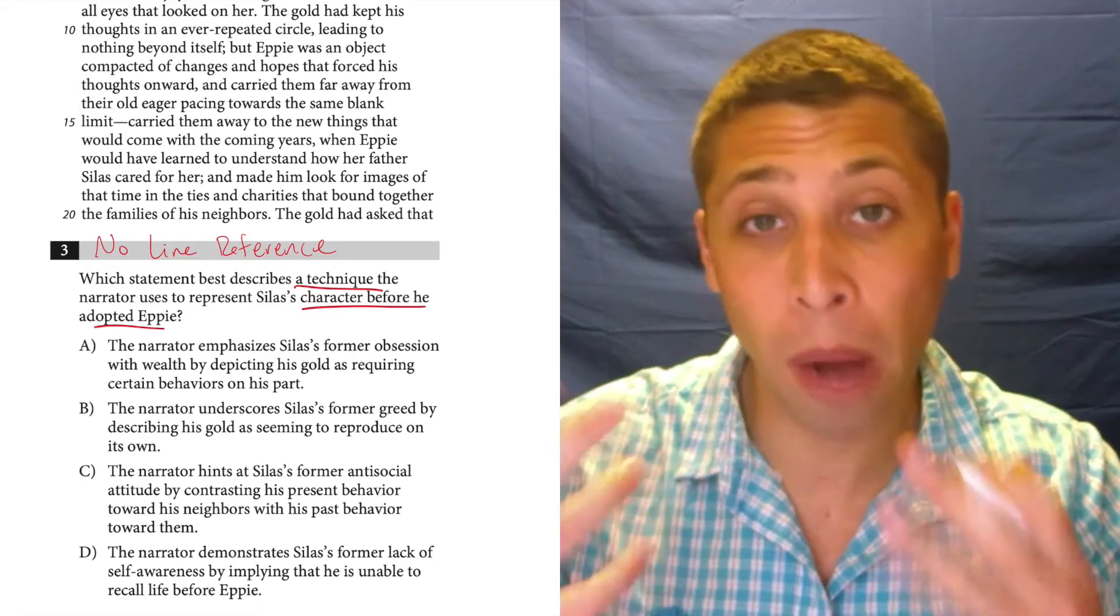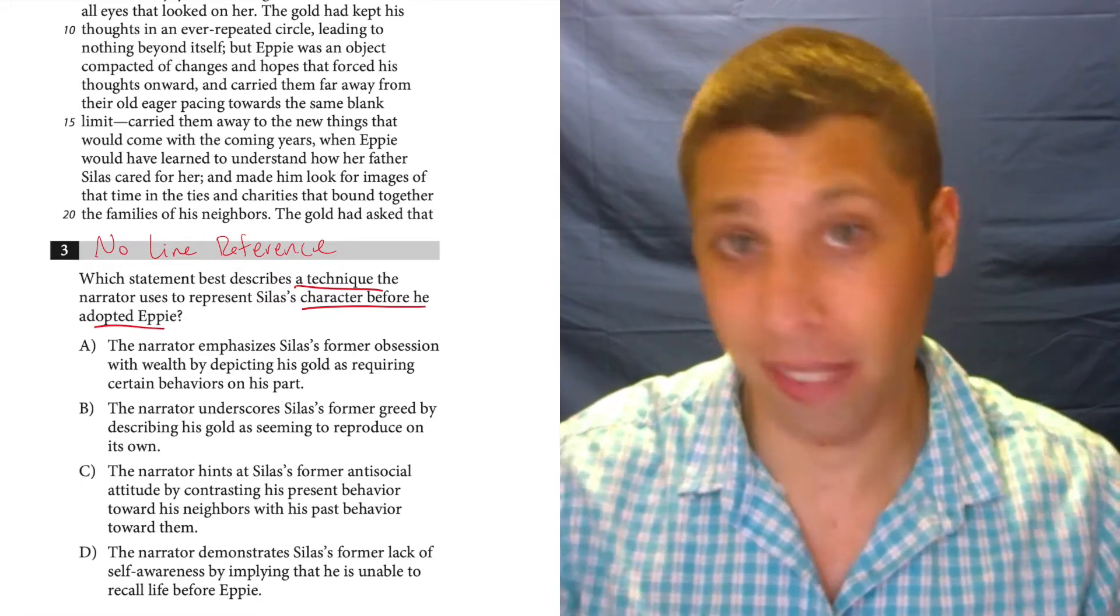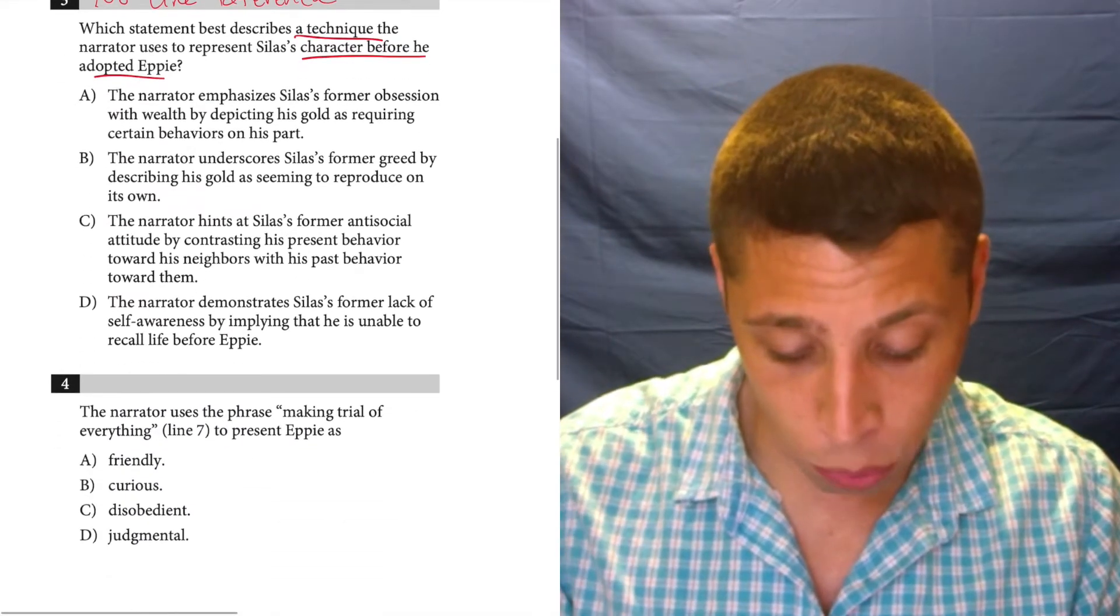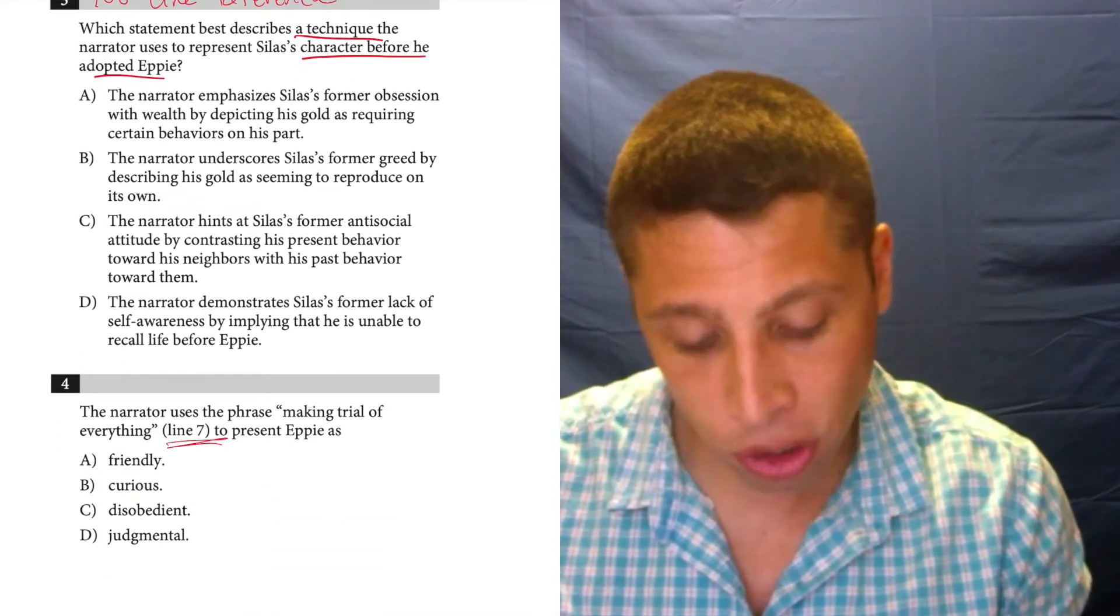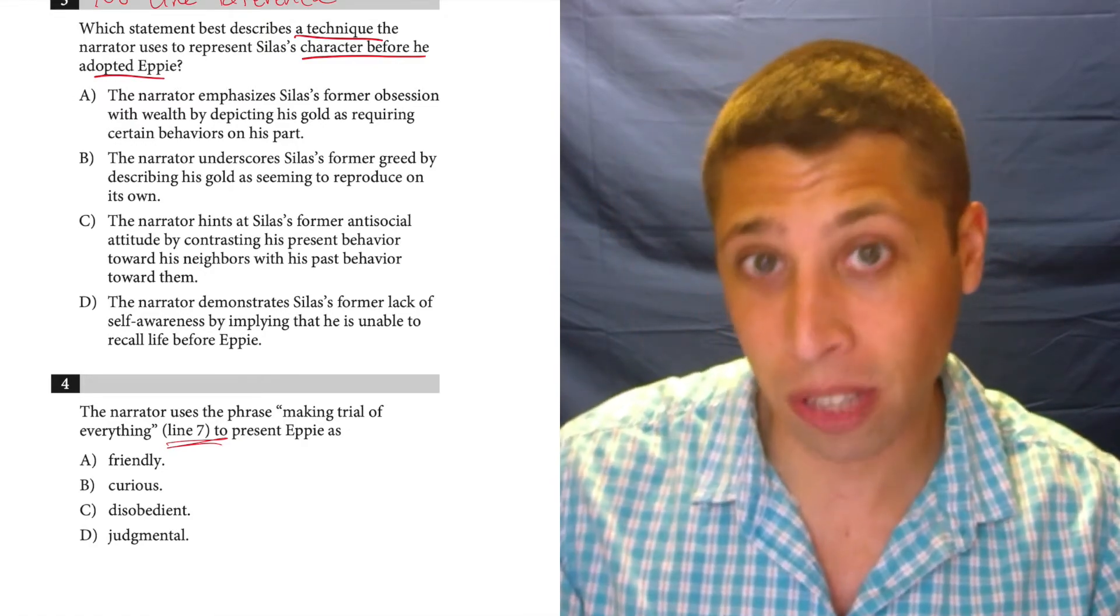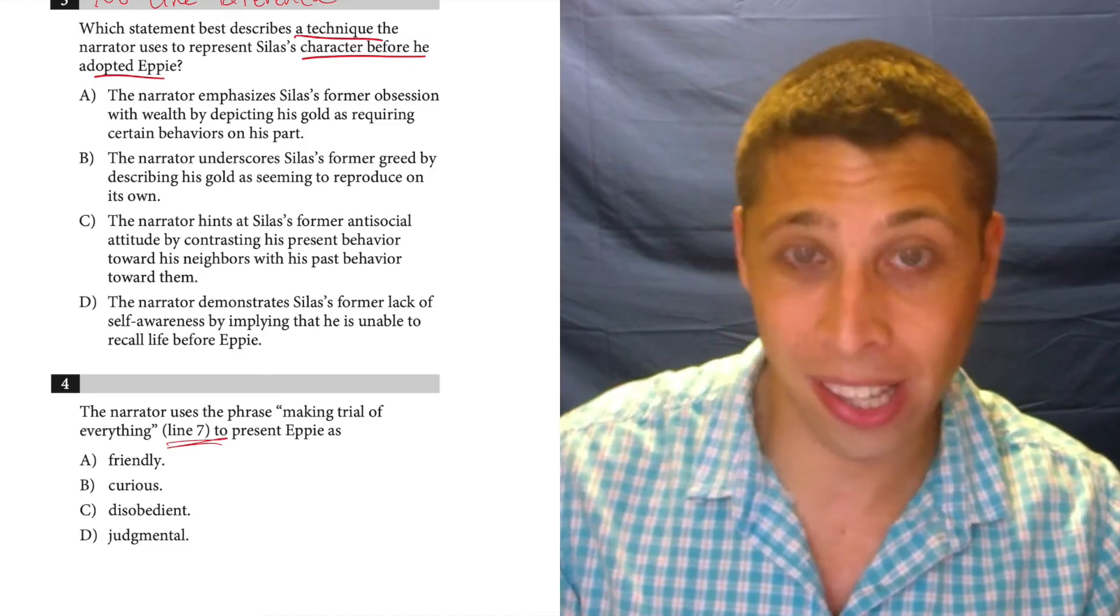So that's a clue that there's probably a narrow set of lines that kind of hint at this answer. And we can once again use the chronology rule to help us here. The next question tells us to look at line seven, so we should think that this answer is going to be before line seven.